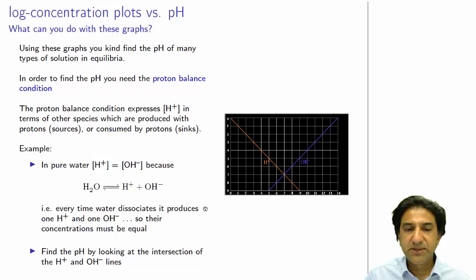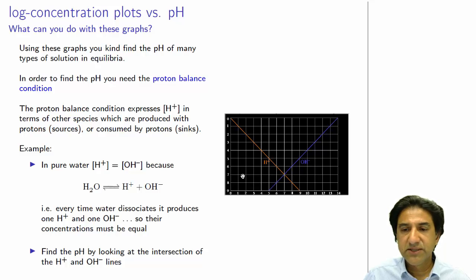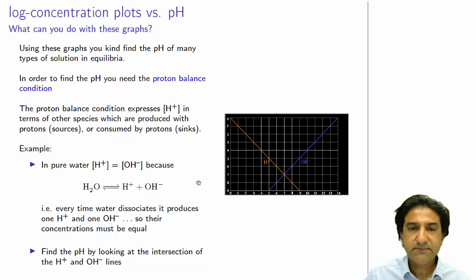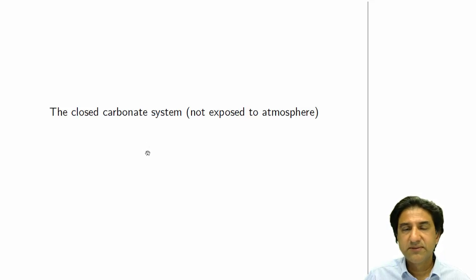How do we use that proton condition to predict the pH of water? We just have to find out where this condition is satisfied. Whenever the proton condition is satisfied, that is the pH for the solution. In the case of water, we look at where H⁺ equals OH⁻, and they intersect at a concentration of 10⁻⁷, which is exactly what we know. Now let's look at a more exciting example: the closed carbonate system, which is H₂CO₃ dissolved in water, not exposed to the atmosphere.